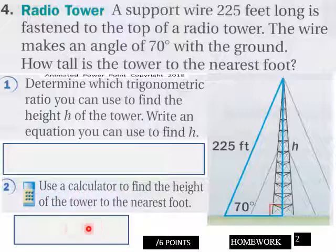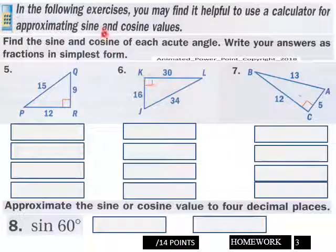Page three, you may find it helpful to use a calculator. Find the sine and cosine of each acute angle. So you got four responses here for each one of these because you got two acute angles for each triangle. So find the sine and cosine of each acute angle.